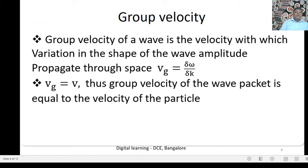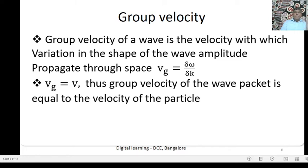Group Velocity is equal to V. Thus, the Group Velocity of the wave packet is equal to the velocity of the particle. We should remember that Group Velocity equals Particle Velocity, and Phase Velocity equals Wave Velocity. That is the physical difference between Phase Velocity and Group Velocity: Phase Velocity is wave velocity, and Group Velocity is particle velocity.